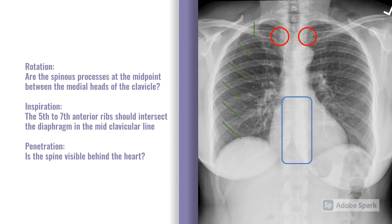The red circles indicate where the clavicle heads are. We want to make sure that the spinous processes are in the middle of the two clavicle heads. Inspiration-wise, the green lines indicate the ribs. Ideally, you want the 5th, 6th, or 7th anterior rib to intersect the diaphragm in the mid-clavicular line — demonstrated here with rib 6 going through the diaphragm. With penetration, we want to make sure that the spine is visible behind the heart. In practice you can easily manipulate the exposure by right-clicking and dragging around the image.